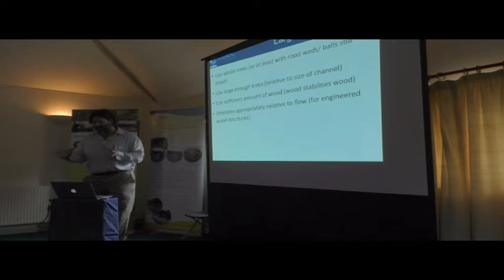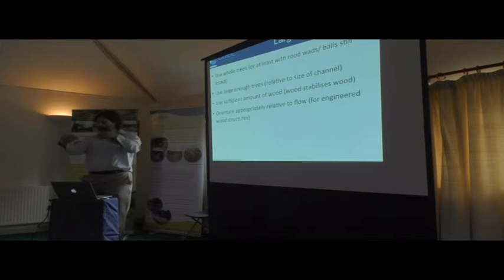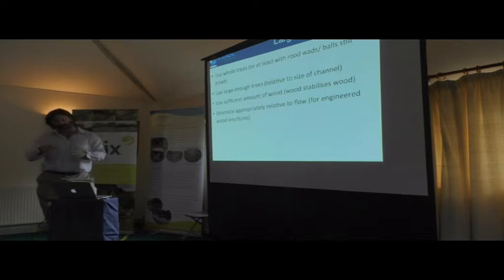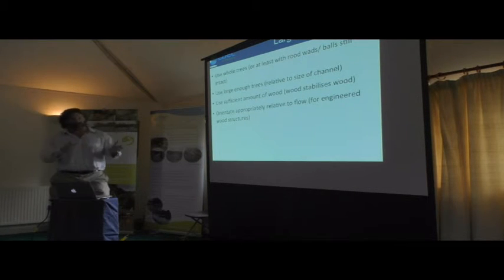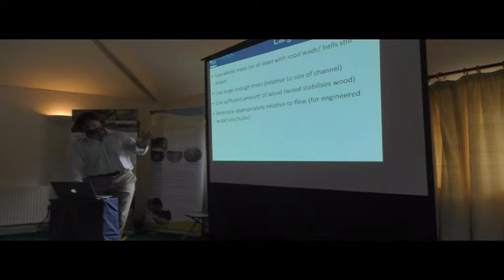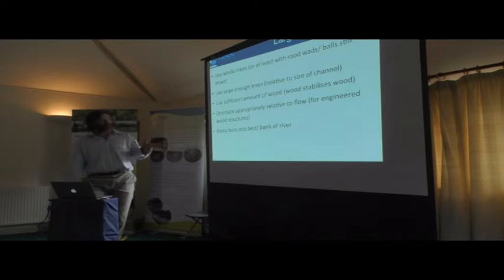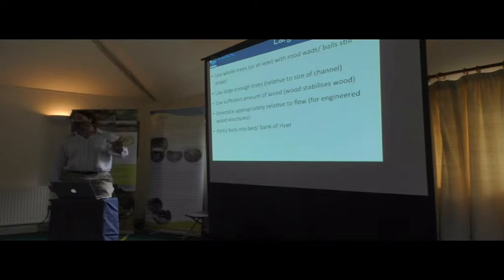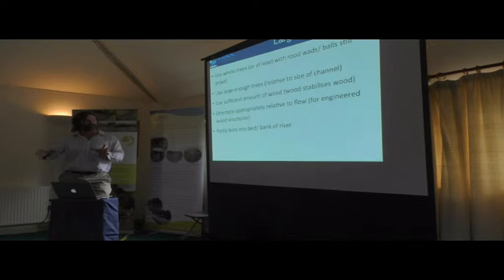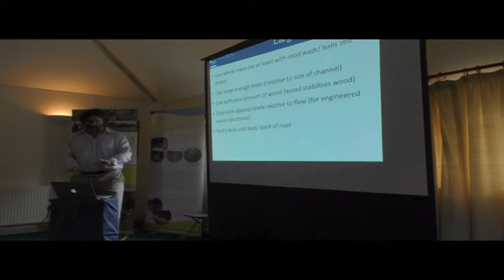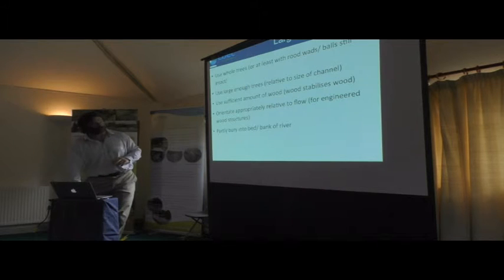For instance, if you want a structure that provides diversity in the channel, you want the root wad facing upstream so it acts as an anchor, with the feature orientated with the direction of flow. Other types of structure are oriented differently, but it's very important to understand how they would naturally be stabilised in the channel. Also, structures should be partly buried into the river bed — you dig a trench, put it in, and cover it up to some extent.